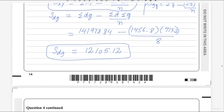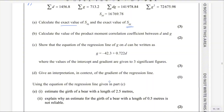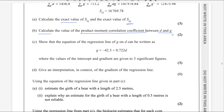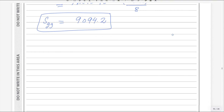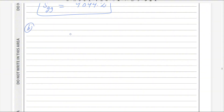First part is done. Let's move on to the second part. Calculate the value of the product moment correlation coefficient between d and g. This formula is given in the formula sheet but in terms of x and y. Let me write that formula in terms of x and y. The product moment correlation coefficient is represented by r and equals Sxy divided by the square root of Sxx multiplied by Syy.